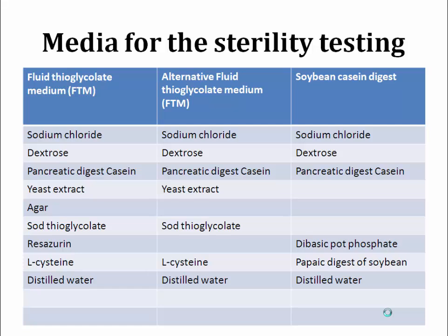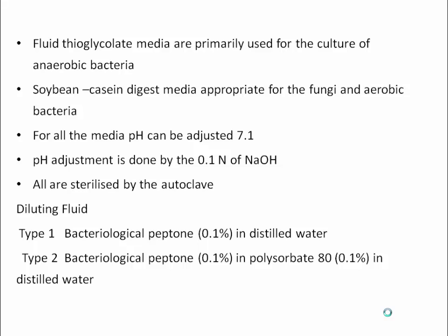In the case of Alternative Thioglycollate Medium, the same ingredients such as sodium chloride and dextrose are used, but agar and resazurin are not included. For Soybean Casein Digested Medium, the two main important ingredients are dibasic potassium phosphate and peptic digested soybean. Fluid Thioglycollate Medium is primarily used for anaerobic bacteria, while Soybean Casein Digested Medium is primarily used for fungi and aerobic bacteria.